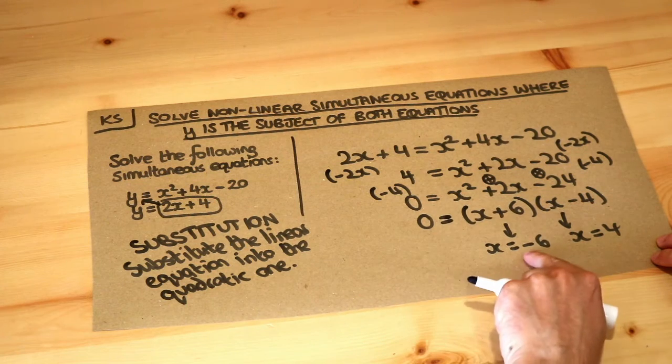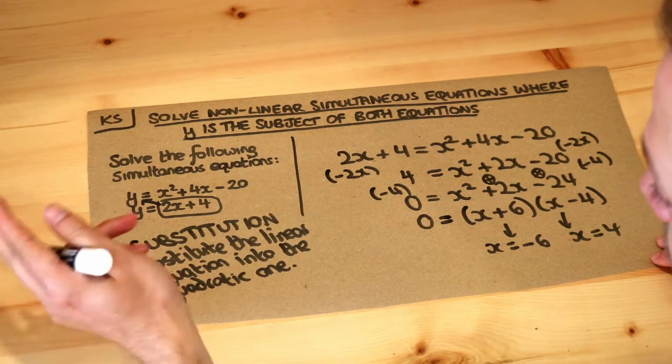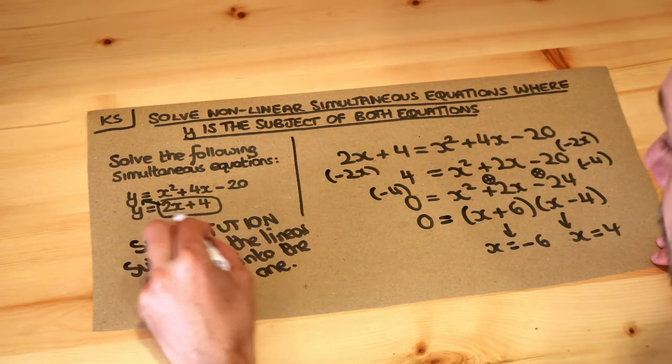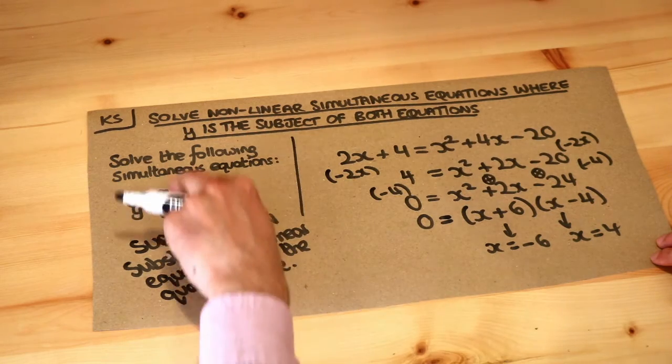So to get the y, I just need to substitute this minus 6 back into the equation. We did the same with linear simultaneous equations. If I do the minus 6 first, let's sub it into the linear equation because that one is slightly easier to substitute into. It doesn't really matter which one you use.